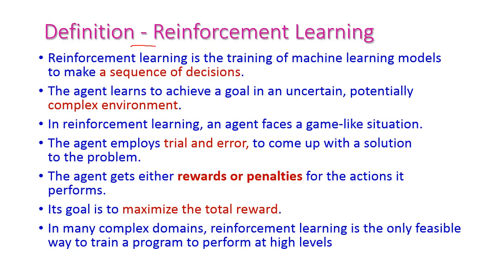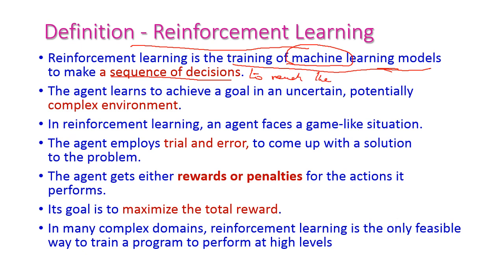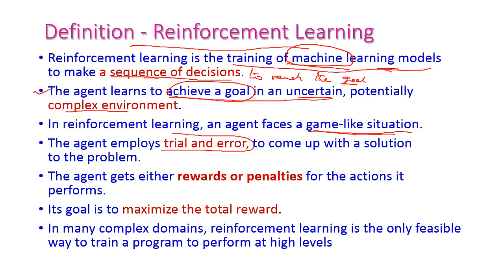What is reinforcement learning? Reinforcement learning is the training of machine learning models. We need to train the machine to make a sequence of decisions to reach the goal. The agent learns to achieve a goal in an uncertain, very complex environment. The agent faces a game-like situation, and on a trial and error basis only it will reach the goal.